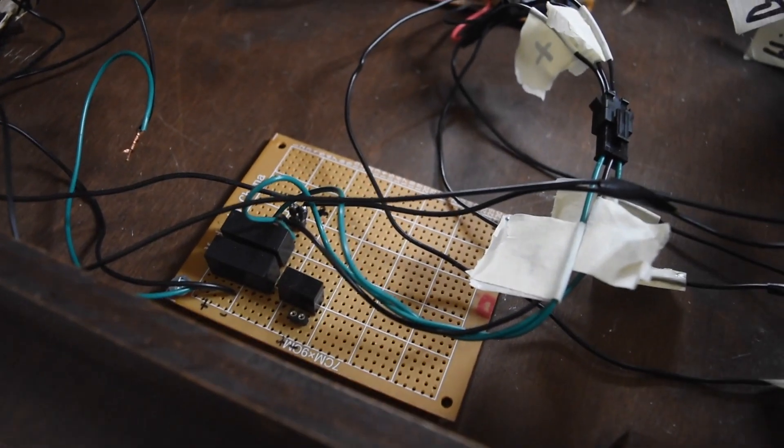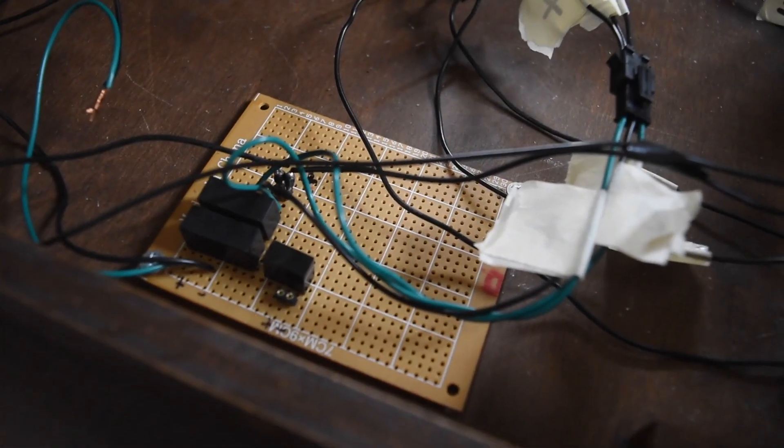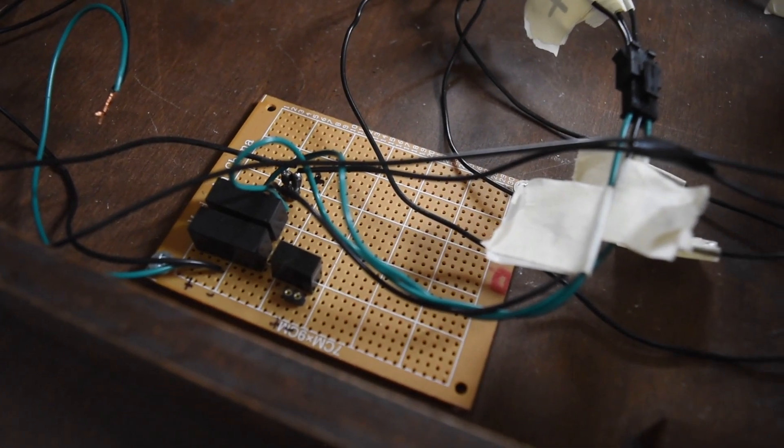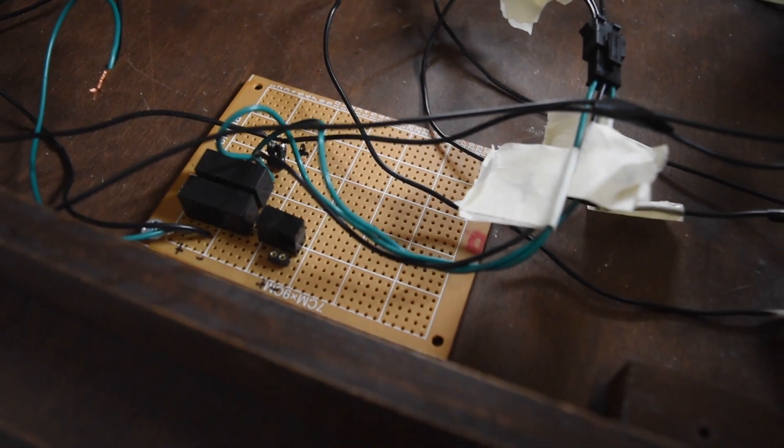The power for all of this comes from this power supply board here, which converts the 12 volt input to the voter into 12 volts, 24 volts, and negative 12 volts.